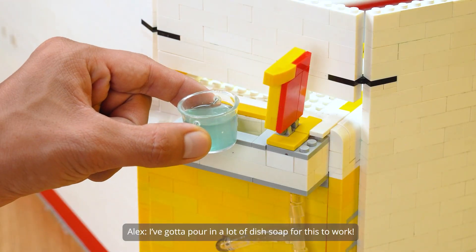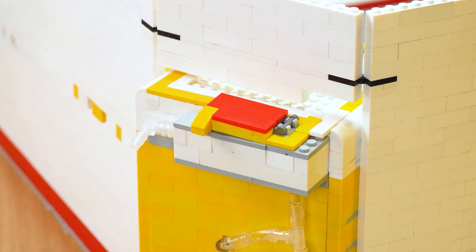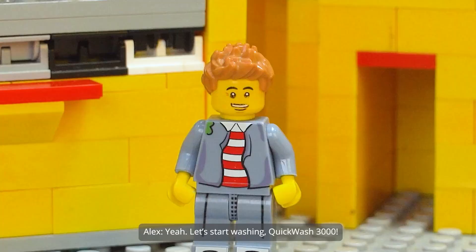I've got to pour in a lot of dish soap for this to work. Yeah, let's start washing. Quick Wash 3000.